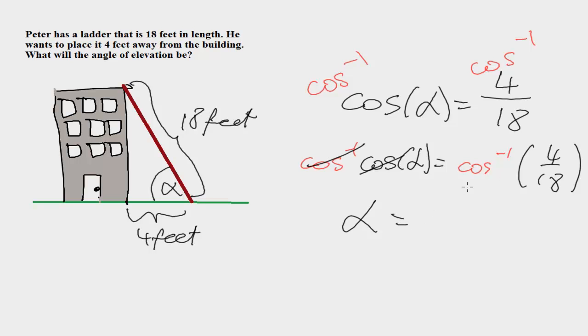To find out what the cosine inverse of 4 over 18 is, we just have to use a calculator. That gives us the angle of about 77 degrees. That means the angle of elevation is going to be 77 degrees.